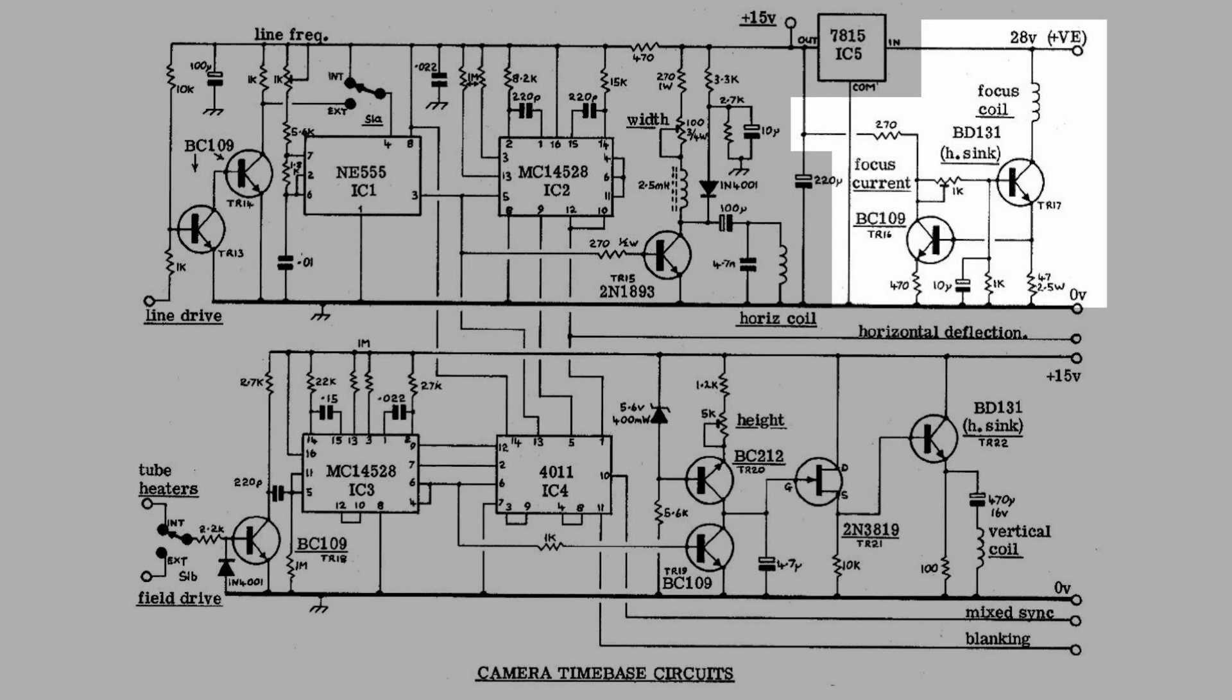The next circuit, which isn't used in the current configuration of Troy's camera, is a constant current regulator. If you look at the upper right, it says focus coil. This is the coil used in a Vidicon tube. The iconoscope does not use a focus coil, so in Troy's camera, this circuit is probably present because it was originally a Vidicon camera, but is disabled. It is not doing anything.